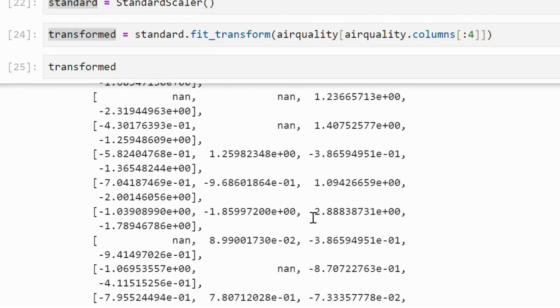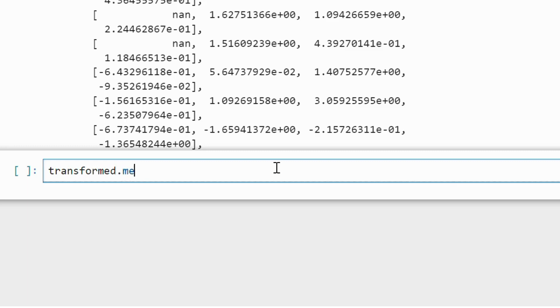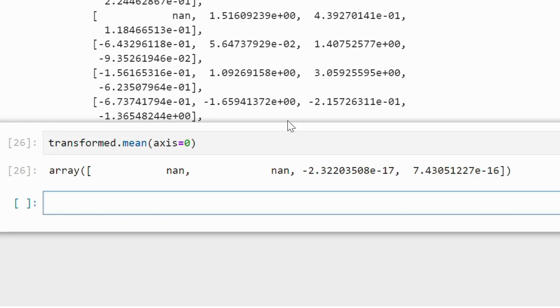And here we have the transformed data, and we can check and verify that the mean is near to 0 and the standard deviation is 1.